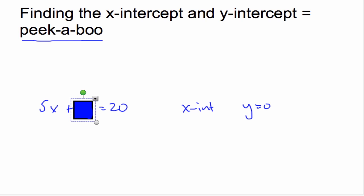And so then I can say that 5x equals 20, so x equals 4. And so the x-intercept is 4, 0.